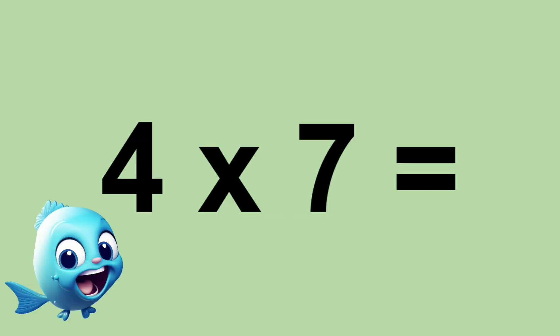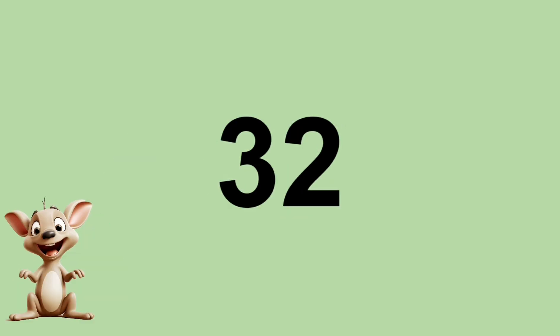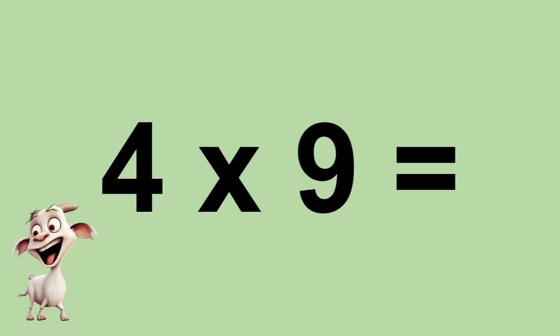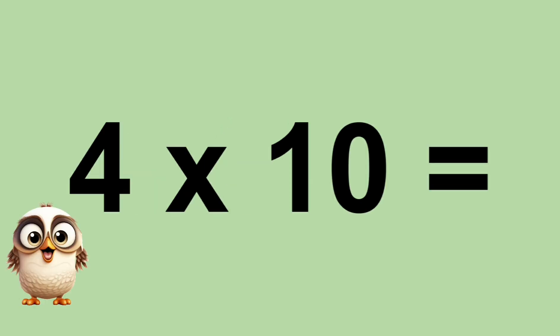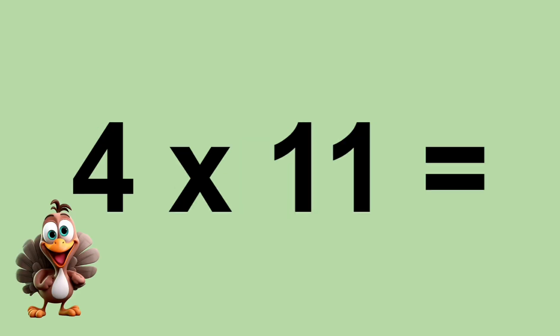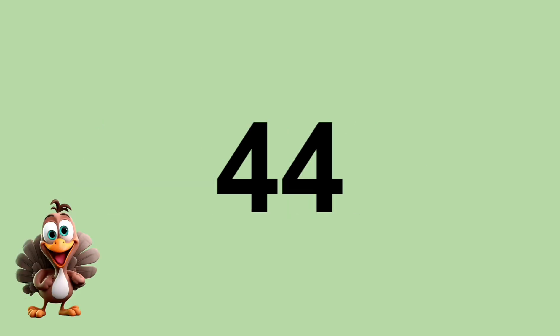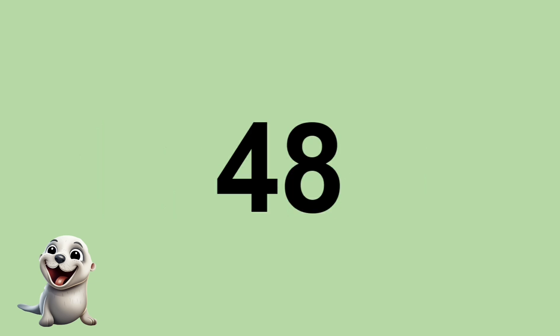Four times seven equals twenty-eight. Four times eight equals thirty-two. Four times nine equals thirty-six. Four times ten equals forty. Four times eleven equals forty-four. Four times twelve equals forty-eight. Four times twenty-five!